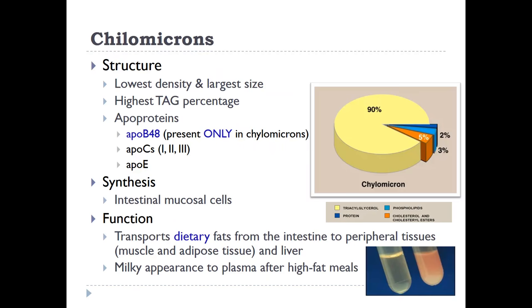Starting with chylomicrons: they have the lowest density and largest size, with low density coming from the high percentage of triglycerides in their core. Their apoproteins are ApoB48 — which is specific to chylomicrons — ApoC, and ApoE. They are synthesized in the intestinal cells, and their function is to transport dietary fats from the intestine to the peripheral tissues and the liver. What's specific about them is that they give plasma a milky appearance about an hour after ingestion of a high-fat meal.